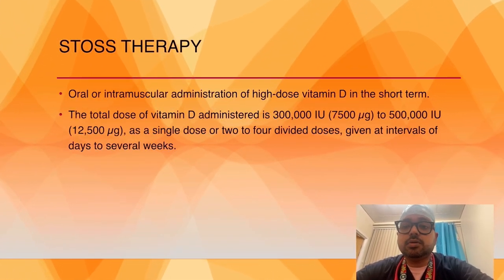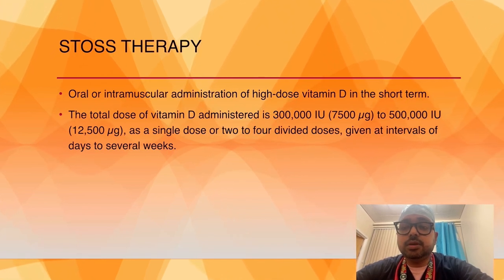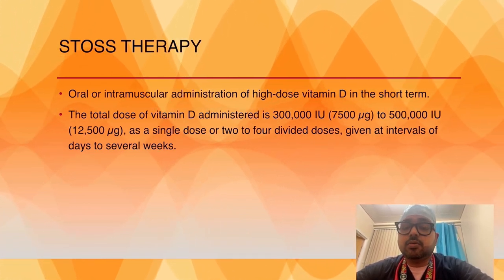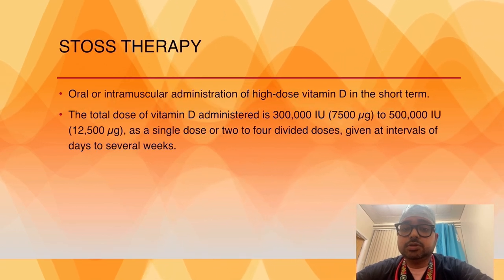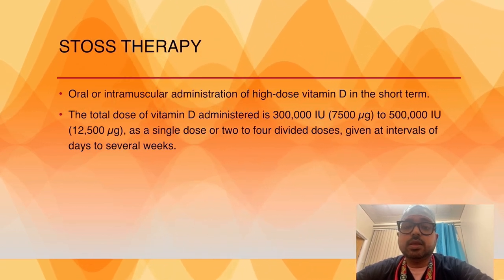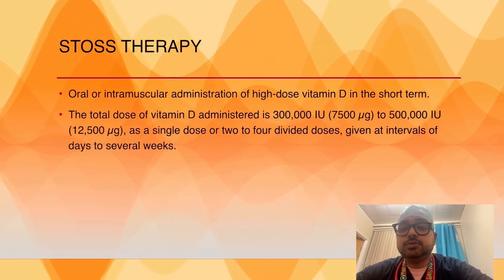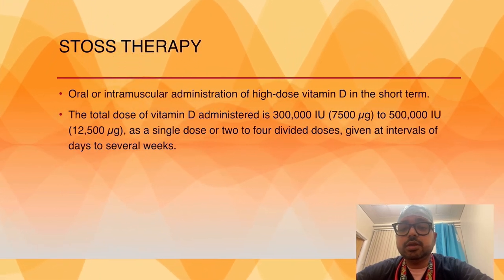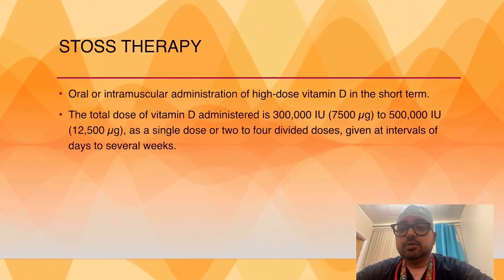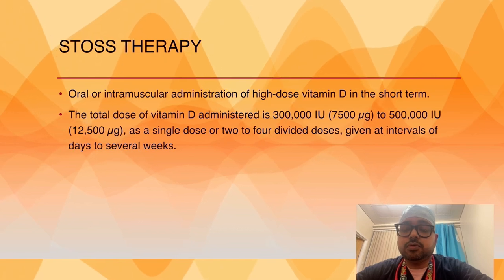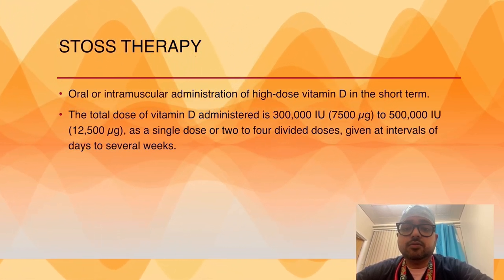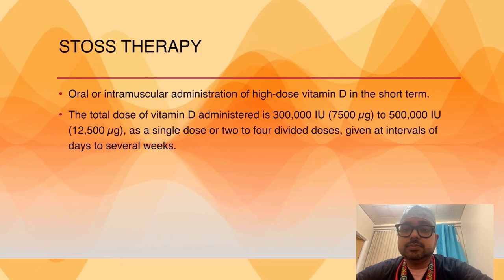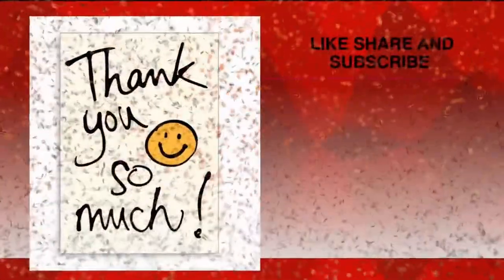You need to remember the Stoss therapy, which is a mega dose of vitamin D given short term, orally or intramuscular administration. The total dose of vitamin D administered is 3 to 5 lakh international units as a single dose or divided into two to four doses given at intervals of days to several weeks.